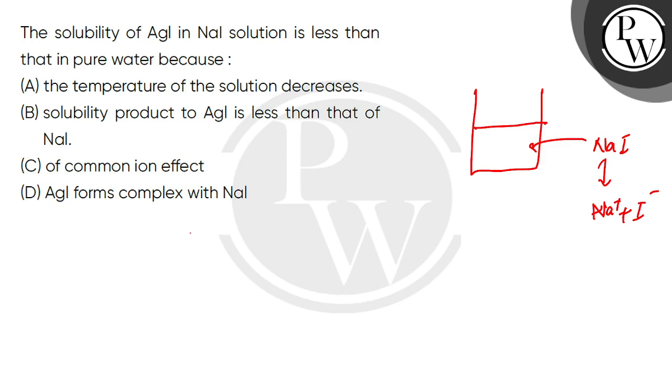Now what have you put in it? AgI. AgI is a sparingly soluble salt, means when it is dissociated here, the equilibrium is established: Ag positive and I negative. It means it is not completely dissociated.